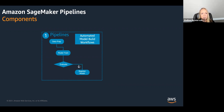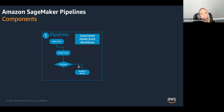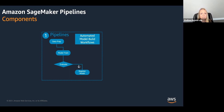Another thing inside Pipelines to keep in mind is step caching. With step caching, you can essentially cache the results of the previous step so that it doesn't have to execute again. An example: you have your data preparation step and your model training step. Let's say you execute your pipeline and realize in the model training step you want to tweak a couple of the hyperparameters. In that case, you don't necessarily want to rerun that data preparation step again. So with step caching, you can pick that step back up where it changed and re-execute using the output from the previous step without re-executing it. That's good not only for saving time but also cost.